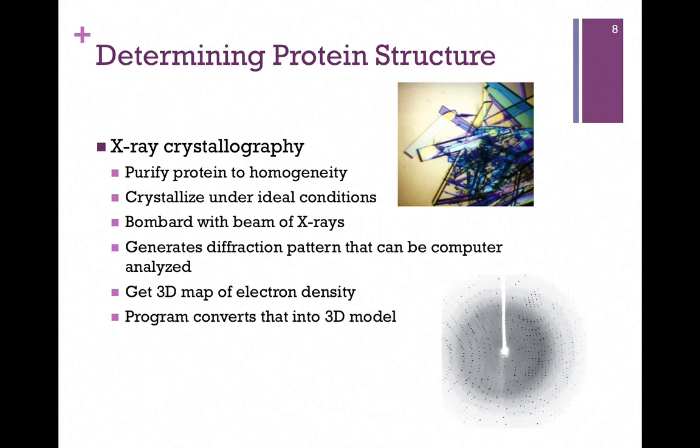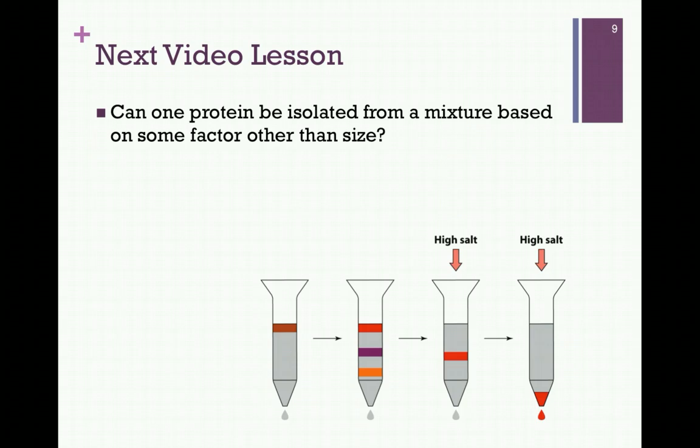And of course that pattern is very complex. That's pictured on the bottom right here. But we can analyze that by a computer program, and it will give us the three-dimensional map of the electron density. We can then convert that by use of a program into a three-dimensional model. All of the models, whether it's the ball and stick, the ribbon diagrams, or the space-filling models, those all came about from X-ray crystallography.